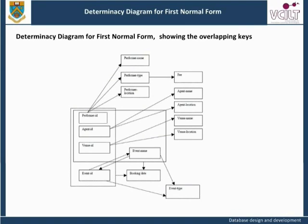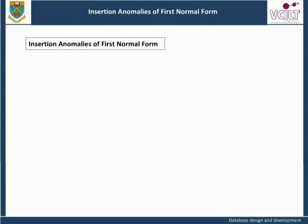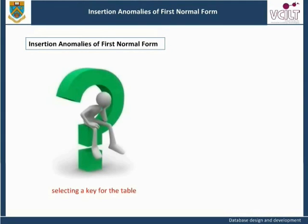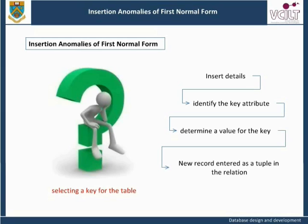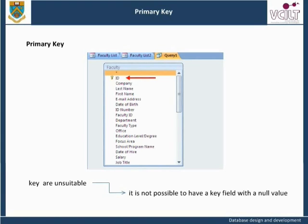The aim of converting an unnormalized table of data into first normal form is to remove repeating values. There is a problem in selecting a suitable key for the table in its current format. If we wish to insert details in first normal form, we need to identify the key attribute and determine a value for the key for the new record for it to be entered as a tuple in the relation. There is no obvious choice for a primary key, as attributes we might expect to use as a key are unsuitable because a value is not always available.